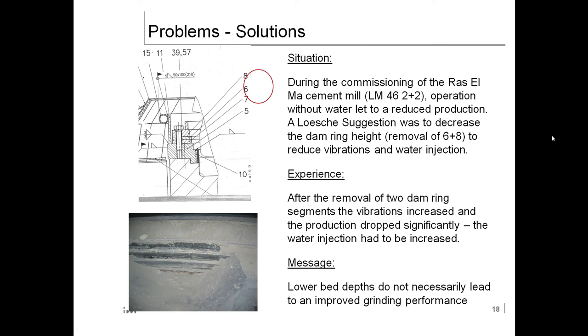During commission of the cement mill, Loesche operation without water led to reduced production. Loesche suggested decreasing the dam ring height by removing segments to reduce vibrations and adding water injection. After removal of the dam ring segments, vibration increased and production dropped significantly. Water injection had to be increased. Lower bed depths do not necessarily lead to improved grinding performance.